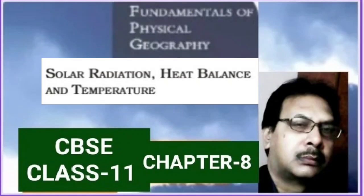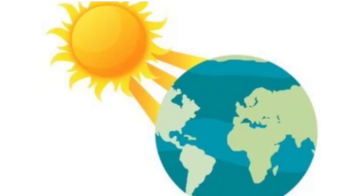In this topic, we are going to discuss the heat budget of the Earth. There is a balance between the incoming solar radiation and the outgoing radiation from the Earth, whether in the form of terrestrial radiation or the amount of heat and energy reflected back without heating the atmosphere or the Earth's surface. The total amount of heat received by the Earth at the outer layer of the atmosphere is completely returned back to outer space, so the net heat of the Earth remains the same.